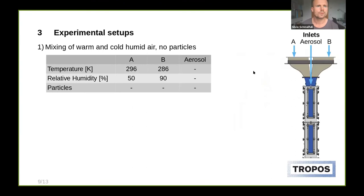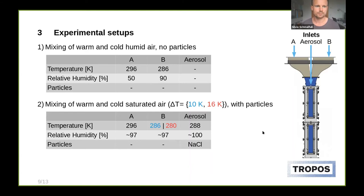We present two experimental setups: first, the mixing of warm and cold humid air without particles — warm air in branch A and cold air in branch B with different relative humidity, no aerosol. Second, the mixing of warm and cold nearly saturated air, with both branches at 97% relative humidity, using two temperature differences of 10 K and 16 K, and sodium chloride particles of 400-nanometer dry diameter injected as cloud condensation nuclei.